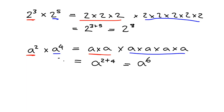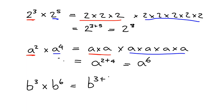This makes it very easy if we follow this general idea — we can do it without having to write it all out. For example, if I asked you what is b cubed multiplied by b to the 6, b cubed will be 3 b's multiplied together and b to the 6 will be 6 b's multiplied together. So when you put it all together, you will have 3 plus 6 — in other words, 9 b's all multiplied together.